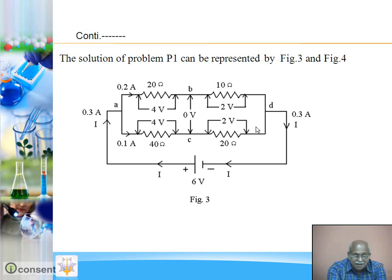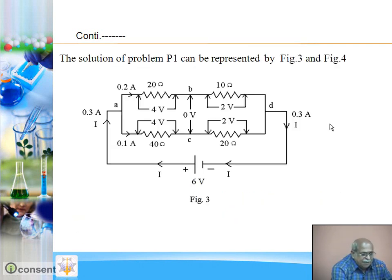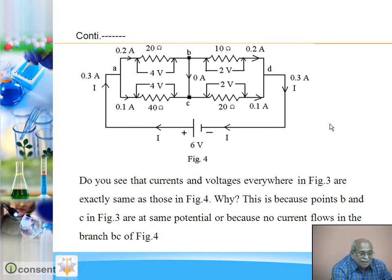In the same way, current in each resistance of Figure 2 and PD across each resistance of Figure 2 is shown in Figure 4. Look at Figures 3 and 4 carefully. Compare carefully - this is Figure 3 and here is Figure 4. A careful inspection shows that in both figures, current in respective resistances are same and also potential difference across respective resistances are same.